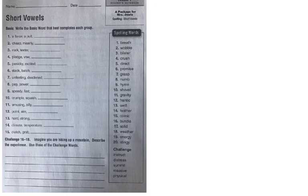Your challenge words are instruct, distress, summit, massive, and physical. We are going to do a word sort where we find words that best complete each group. Number one says 'a force, a pull.' When we think of a force or a pull, we're going to think of gravity — that's number 11 in your list. Write the word gravity on the line.